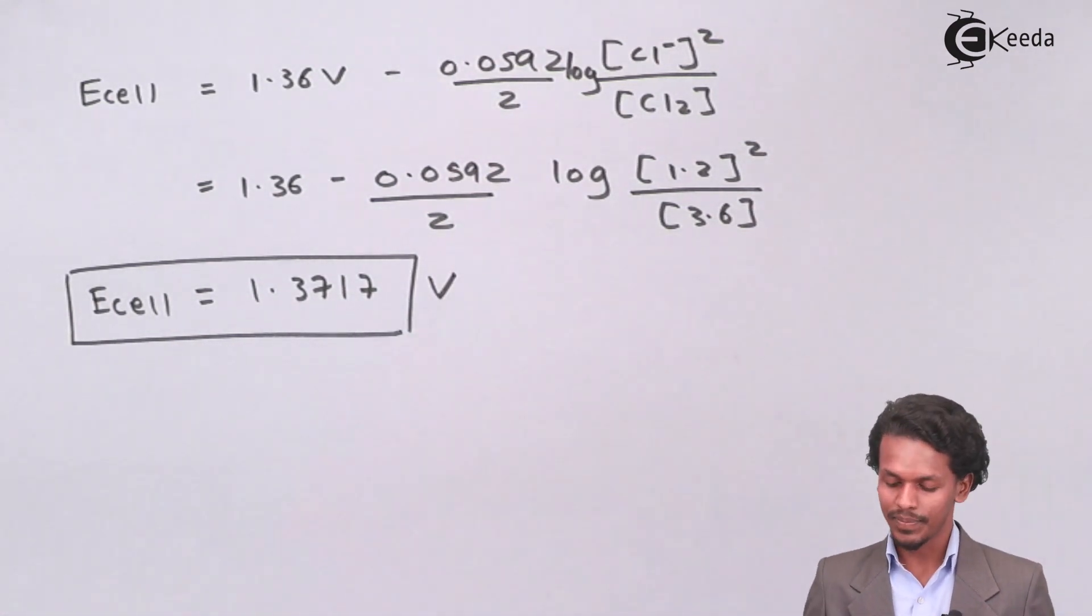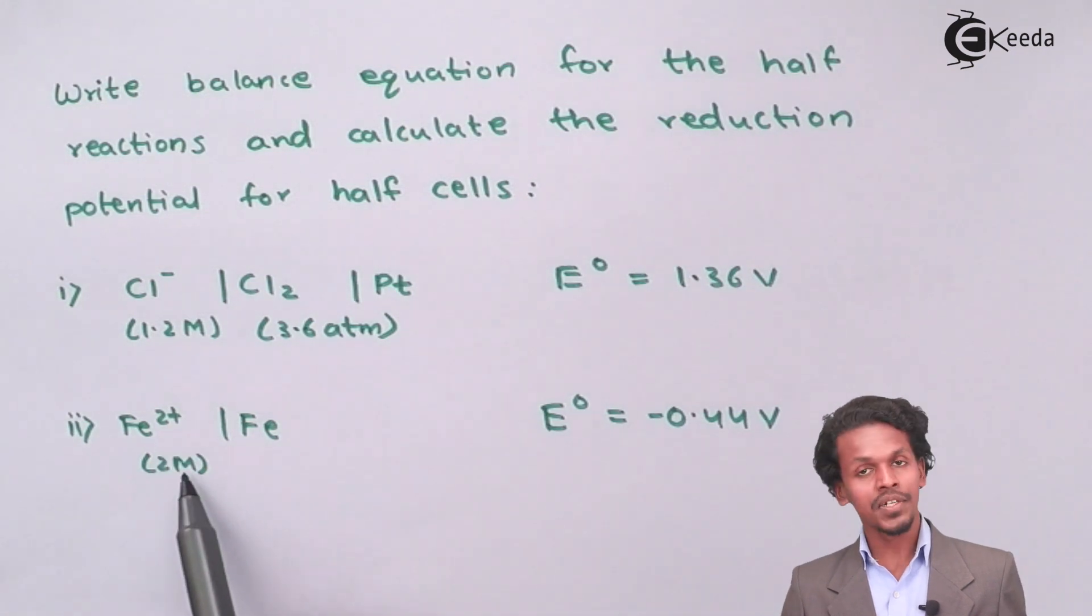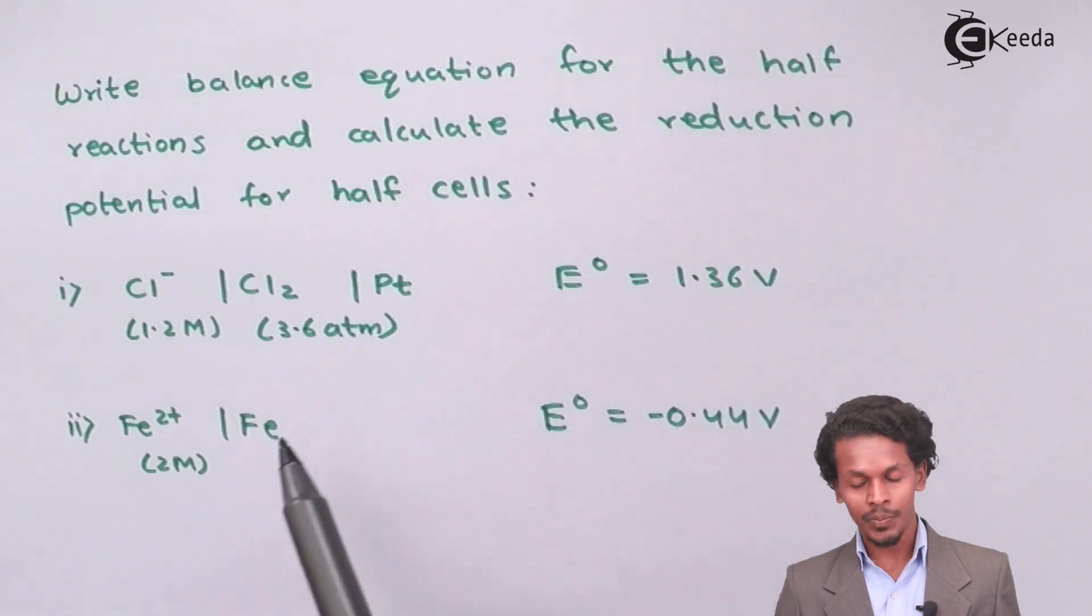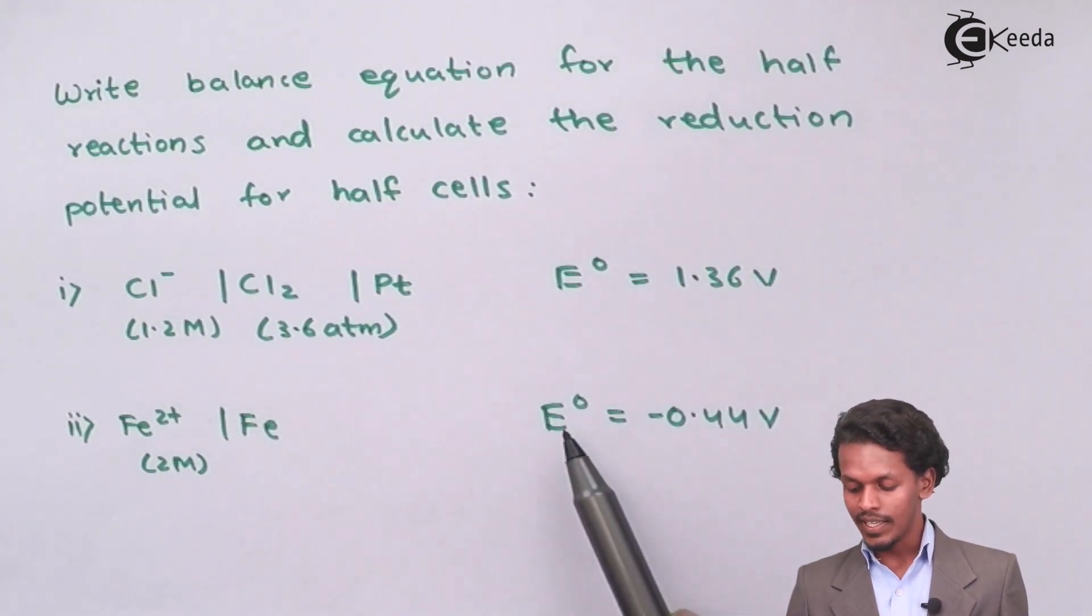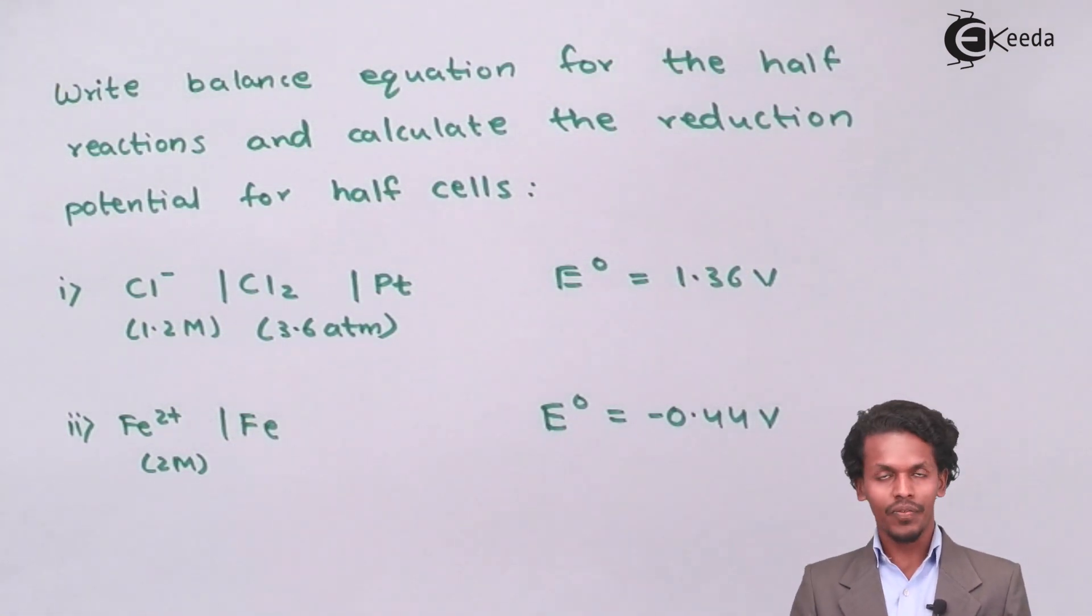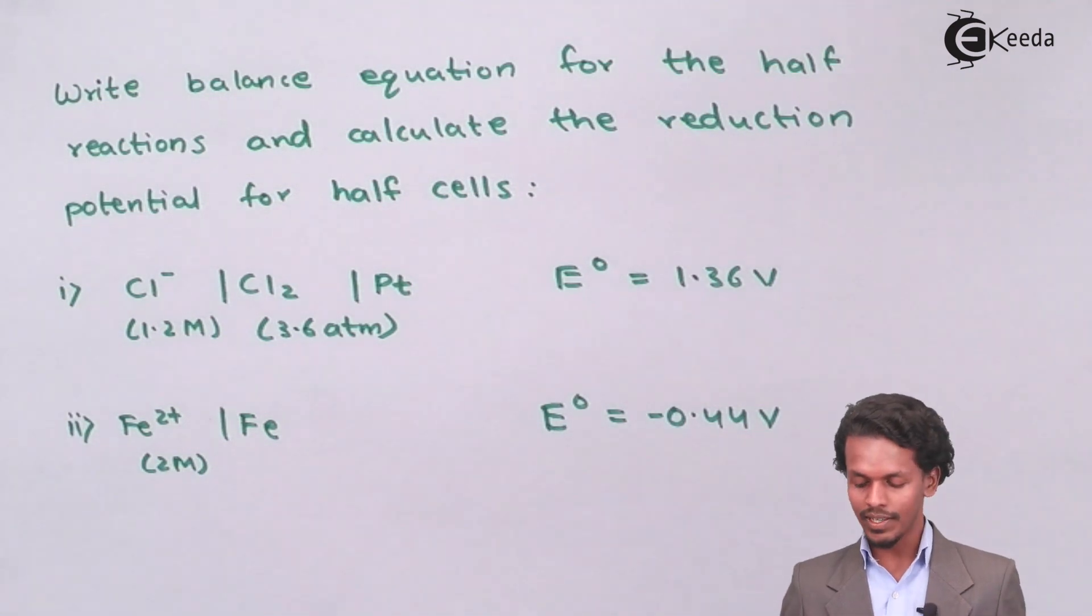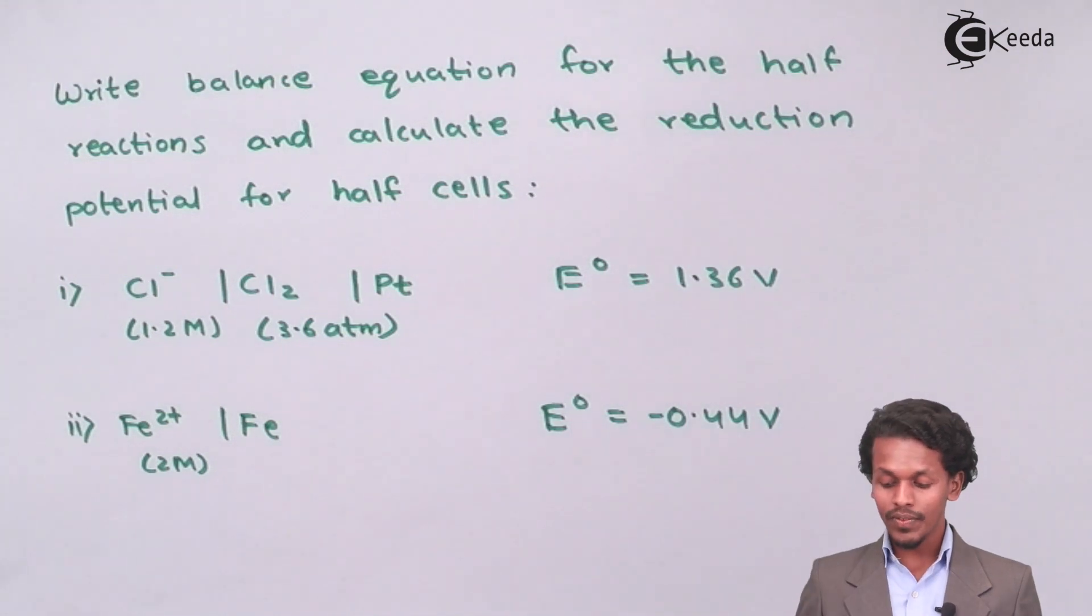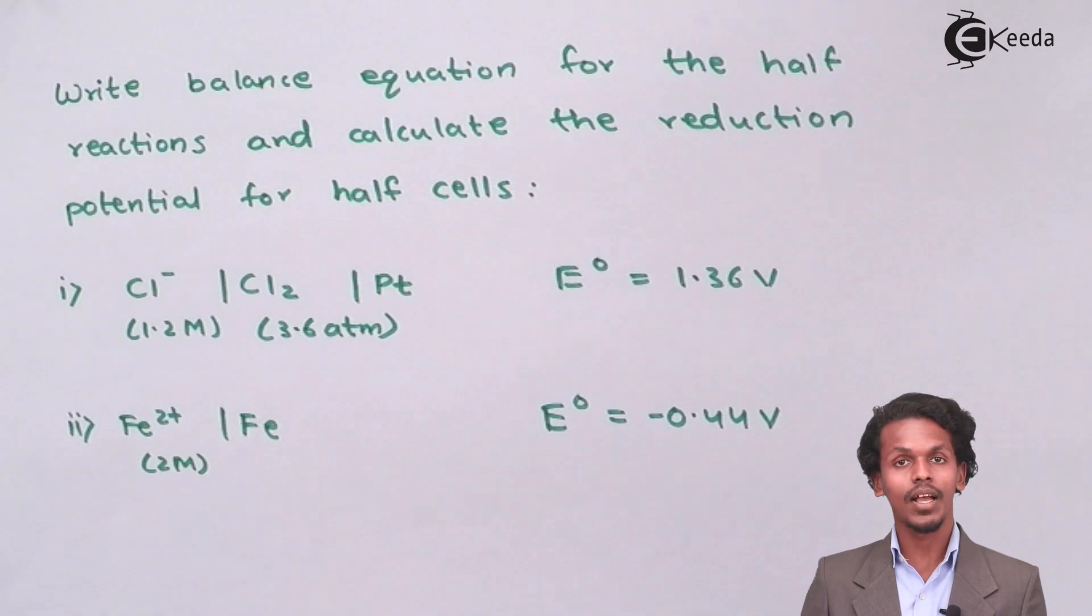Now let us do the second one. In second one they have asked that Fe2+ which has a concentration of 2 molar is being converted into Fe during reduction process and in this case the E0 value of reduction potential is minus 0.44V. With the help of this we could calculate the reduction potential.